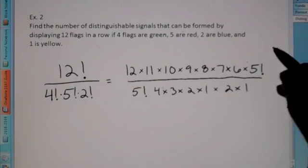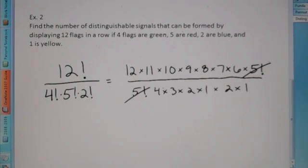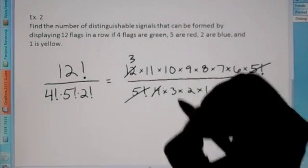So again, twelve factorial. We worked our way down so that we can reduce this five. Four divided... Four goes into twelve three times.